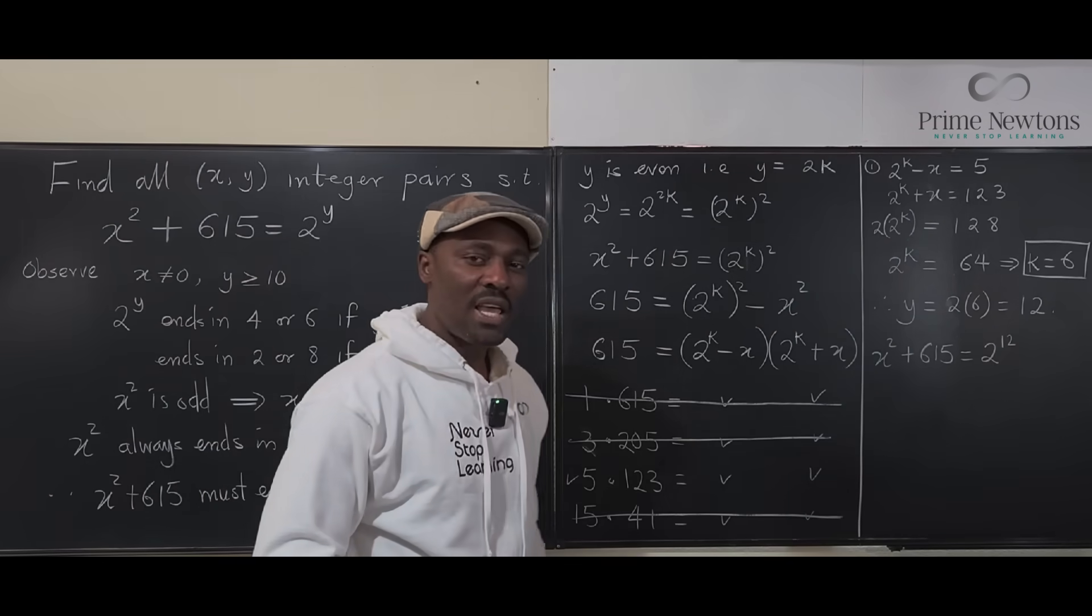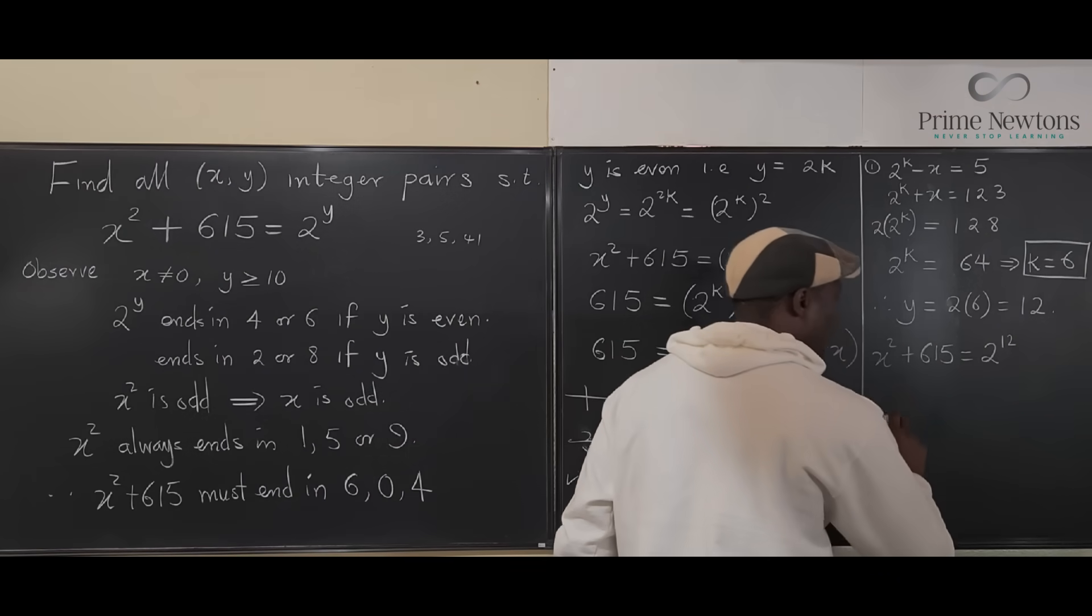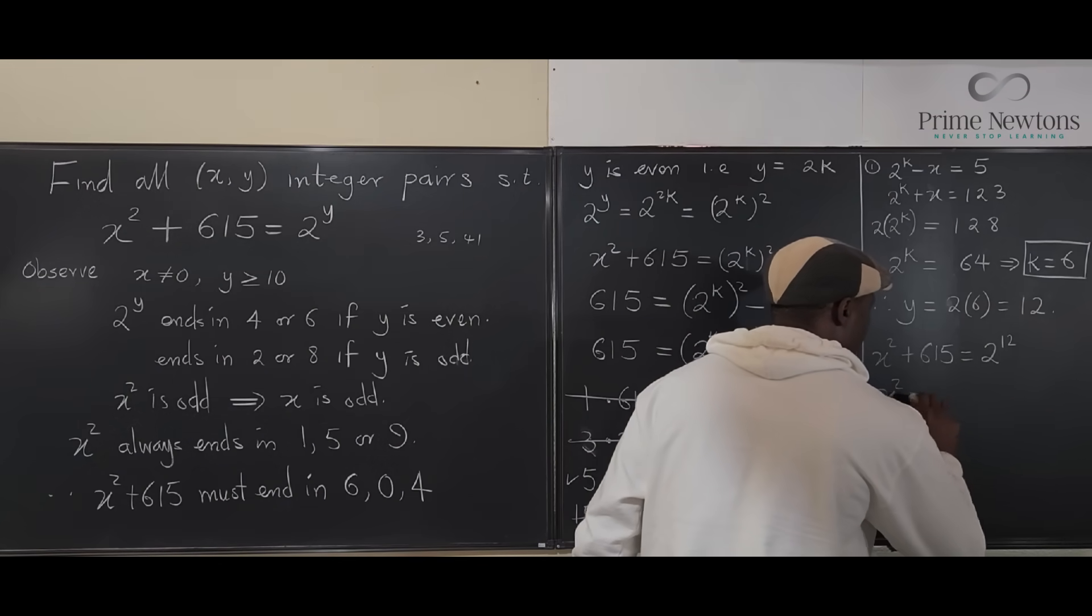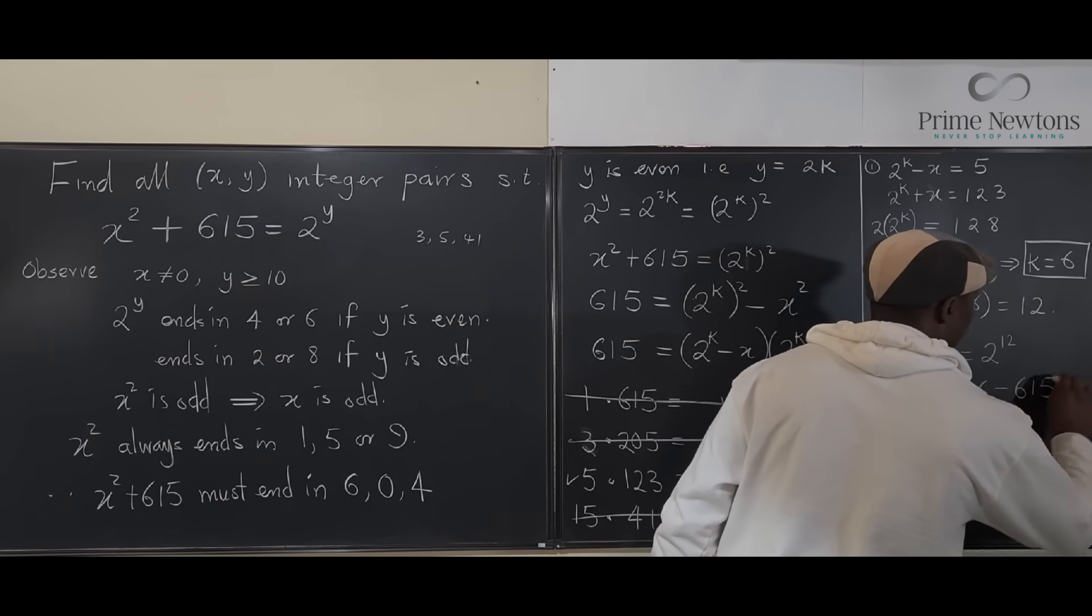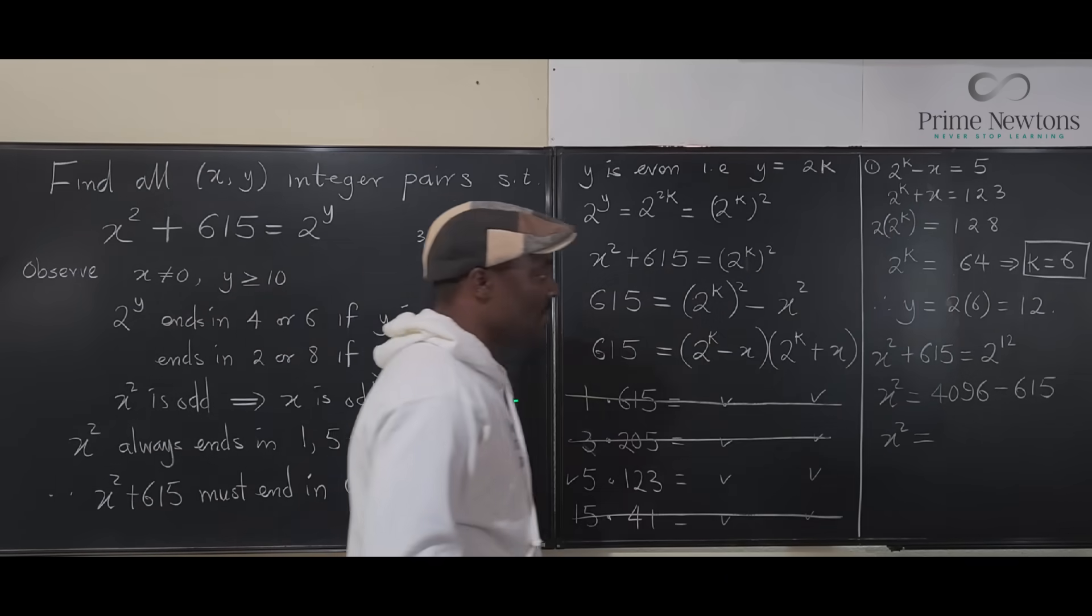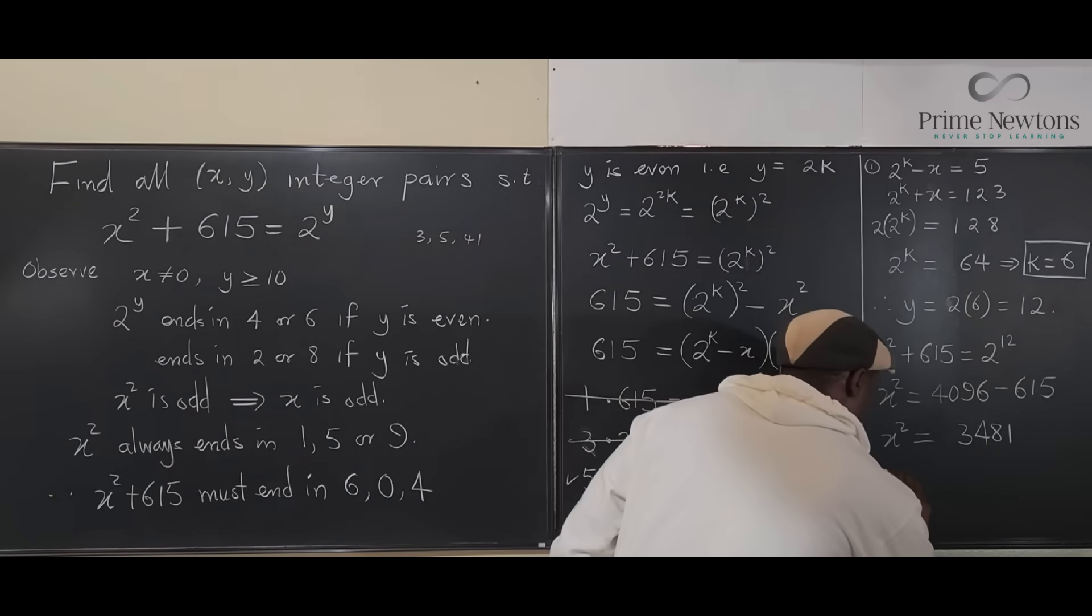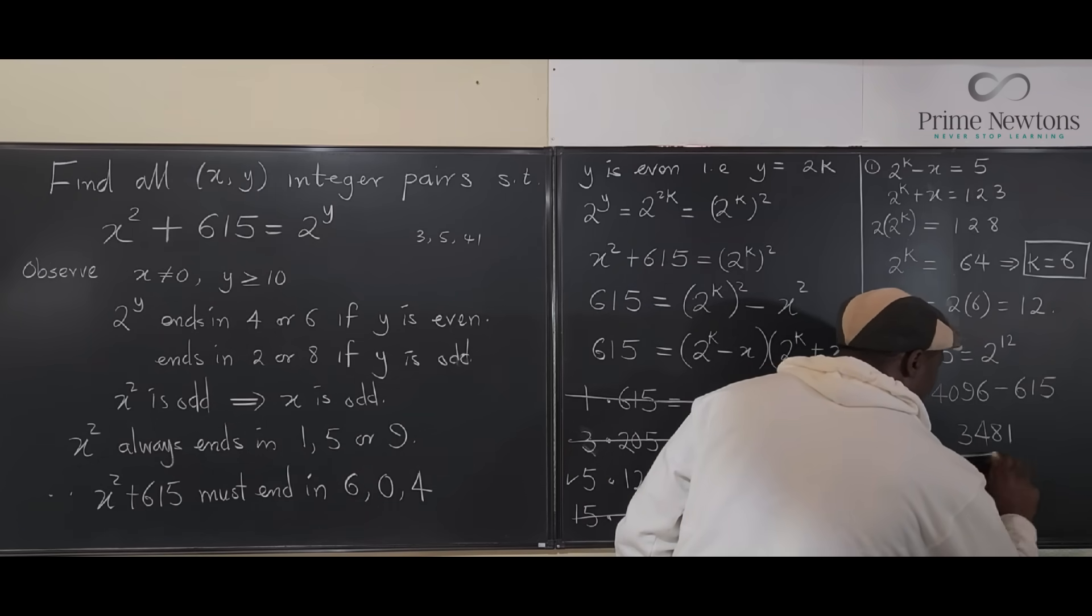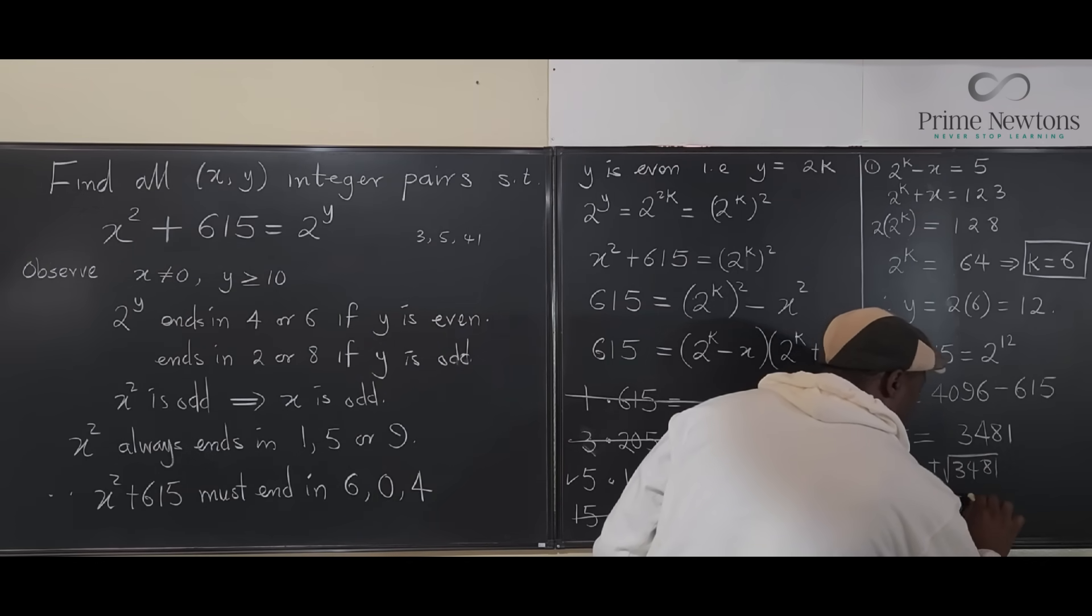So, we have x² plus 615 equals 2 to the 12. Now, 2 to the 12 is 4096. So, we know that x² equals 4096 minus 615. So, x² is equal to 3481. That's a familiar number, 59. So, we know that x will be equal to plus or minus the square root of 3481. That means x equals plus or minus 59.